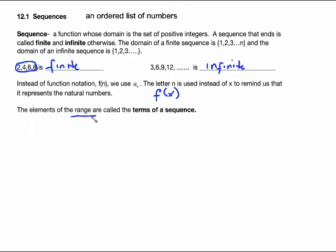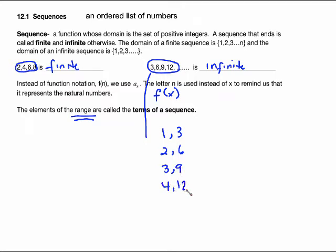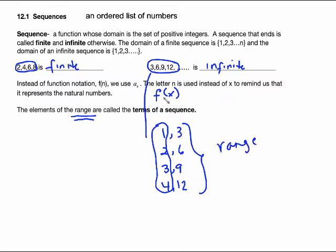The elements of the range are called the terms of a sequence. For the sequence 3, 6, 9, 12, thinking of it as ordered pairs: plug 1 in and get 3, plug 2 in and get 6, plug 3 in and get 9, plug 4 in and get 12, and so on — that's infinite. The positive integers 1, 2, 3, 4 are plugged in to generate those numbers, which are elements of the range, and the values 3, 6, 9, 12 are called terms of the sequence.